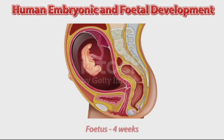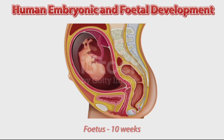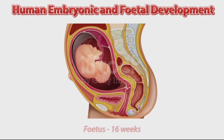After blastocyst formation, growth of the fetus begins. At four weeks the fetus looks like this, at ten weeks the fetus looks like this, and at 16 weeks the fetus looks like this. At 20 weeks the fetus looks like this, and the head direction is oriented towards the vagina.